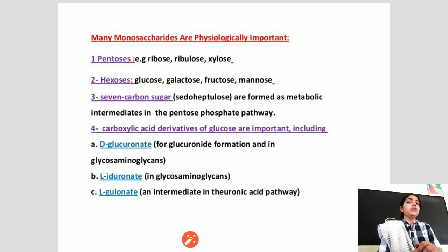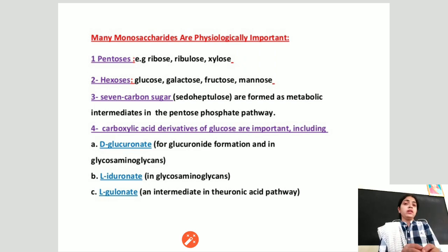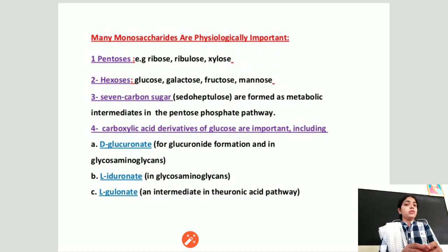Many monosaccharide units are physiologically important and are involved in various metabolic pathways. The first group is the pentoses, containing ribose, ribulose, and xylose sugars, which are involved in various pathways during glucose metabolism. Hexoses include glucose, galactose, and fructose molecules. The 7-carbon sugar, sedoheptulose 7-phosphate, is an intermediate in the pentose phosphate pathway.